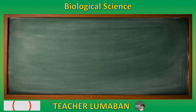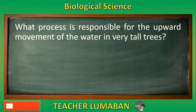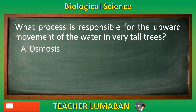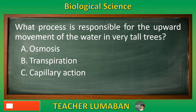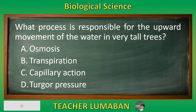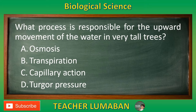What process is responsible for the upward movement of water in very tall trees? Letter A: Osmosis. Letter B: Transpiration. Letter C: Capillary Action. Letter D: Turgor Pressure. Choose the suitable answer based on the given choices in 5 seconds.